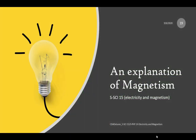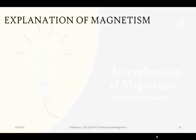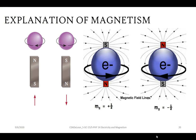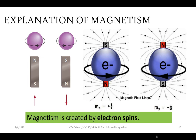Now let's discuss magnetism. Magnetism is created by electron spins. The electrons rotate or spin around their own axis, and the spinning of electrons produces a magnetic dipole. The direction of the electron spin determines the direction of the magnetic field. If the same number of electrons in an atom spin in opposite directions, the electron spins will cancel out.